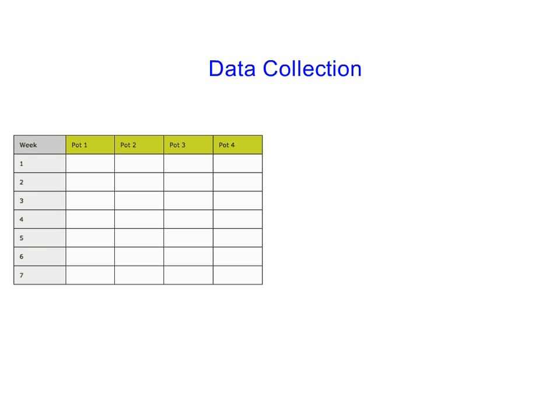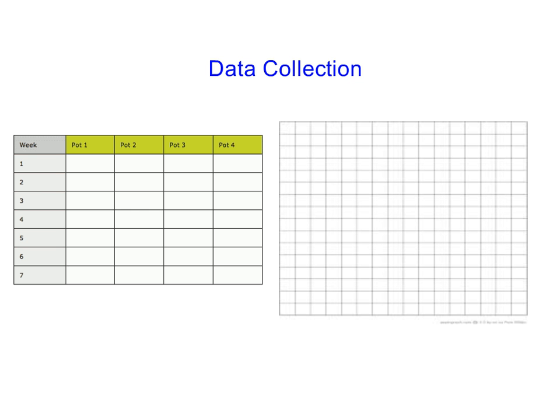Next is the collection of data, which is usually collected in a data table and then organized into a graph. Remember with graphs that the independent variable is always on the bottom and the dependent variable is always on the side.